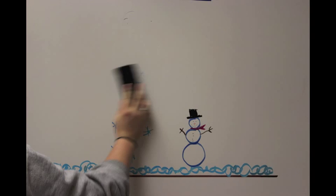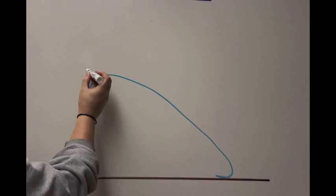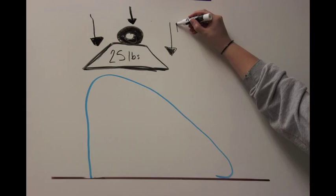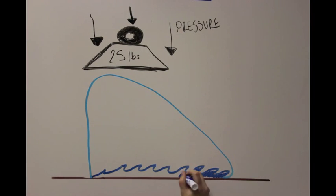Once the glacier forms, the pressure of the ice above causes melting at the bottom of the glacier. This buildup of water causes the glacier to move. This is known as basal slip.